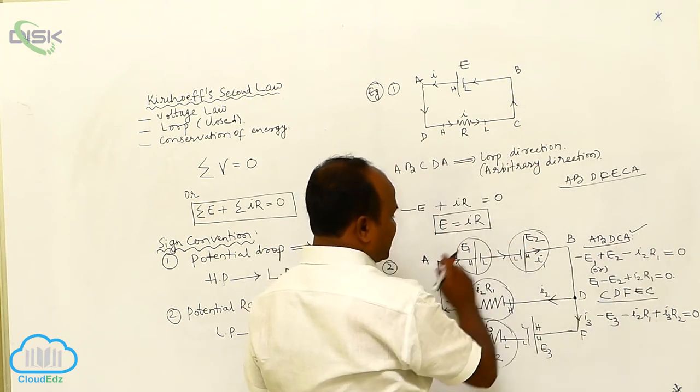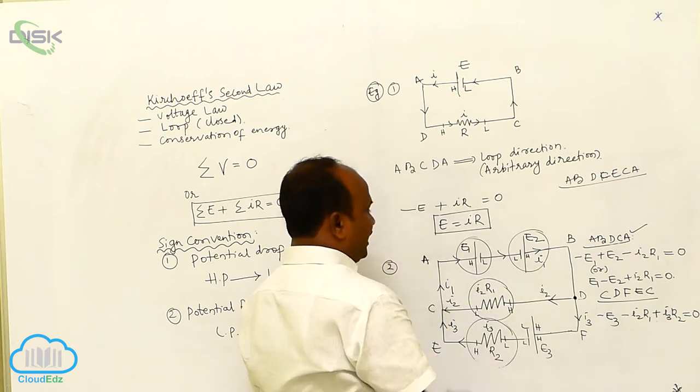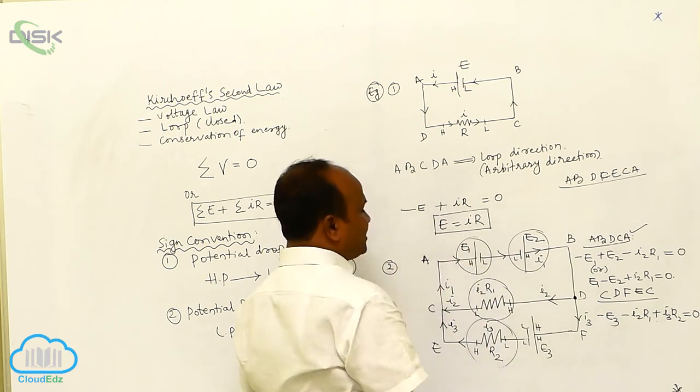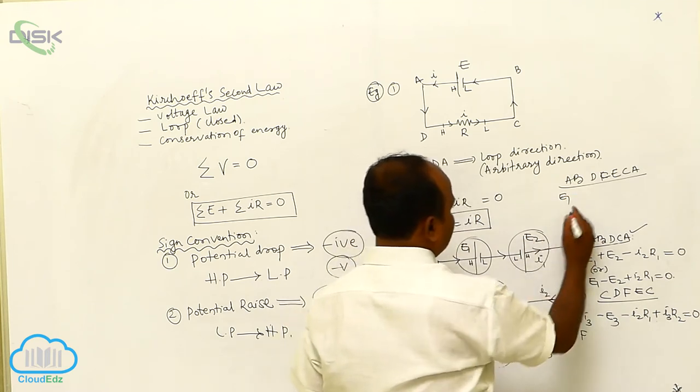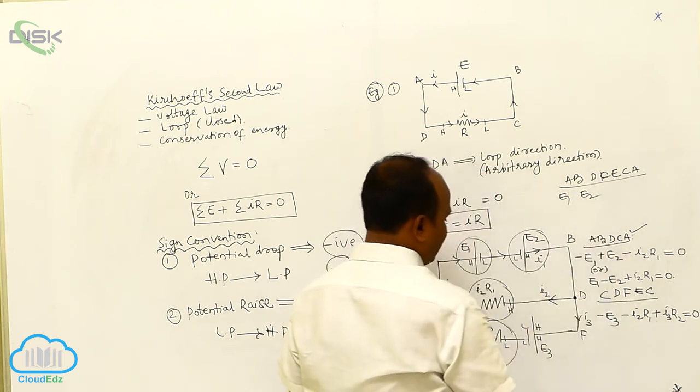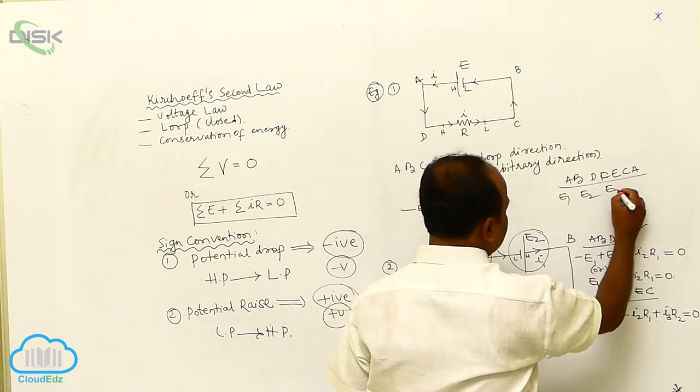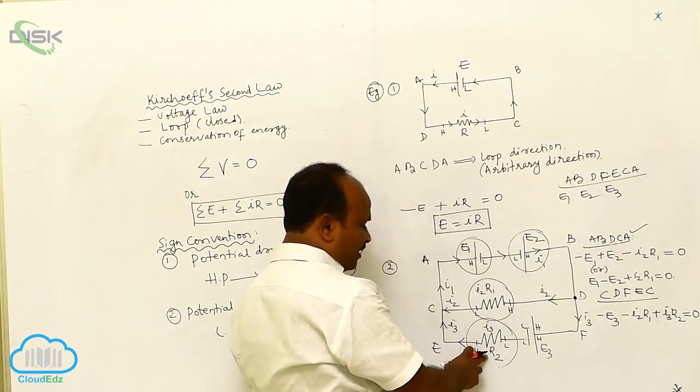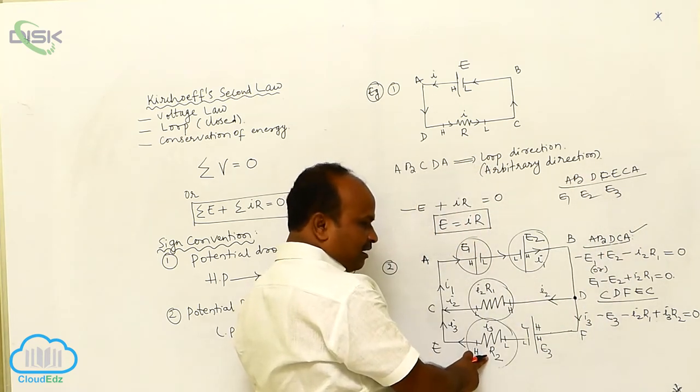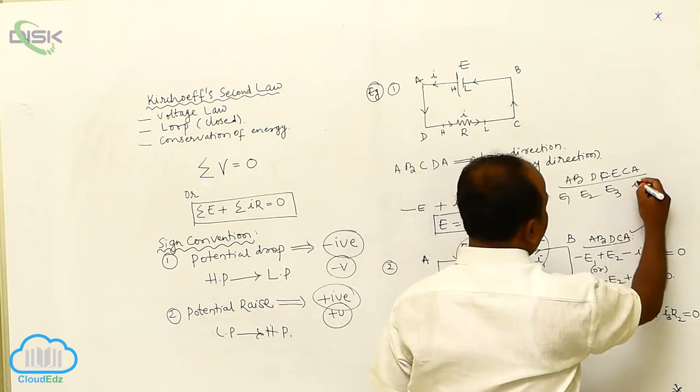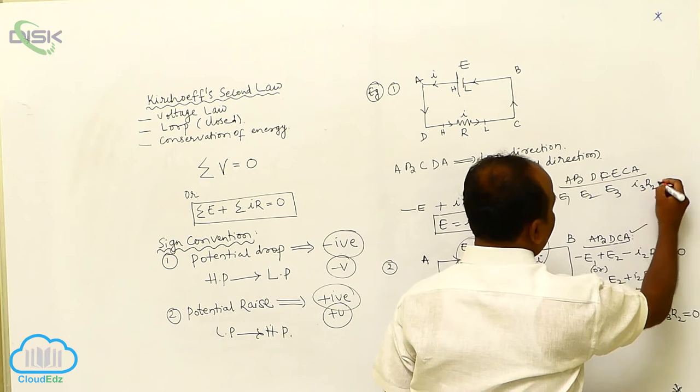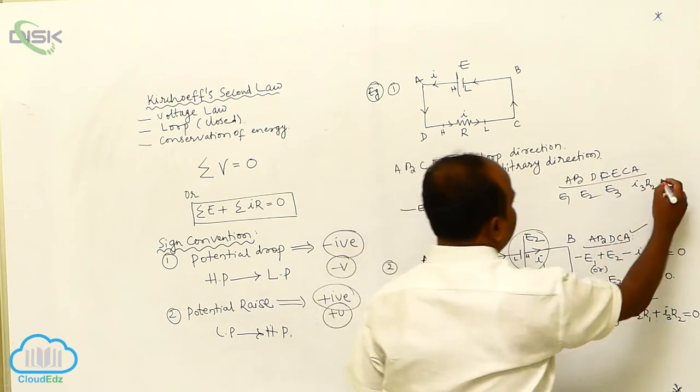This loop is also considered in the clockwise direction. In this particular loop, how many cells are there? E2 and E3. How many resistors are there? Only one resistor, only one branch. The product of current and resistance is I3 and R2. Therefore, the algebraic sum is equal to zero.